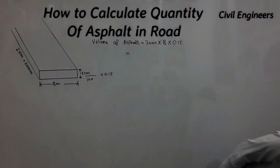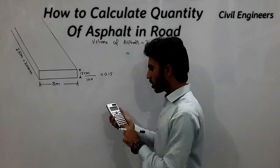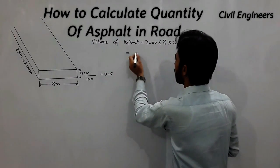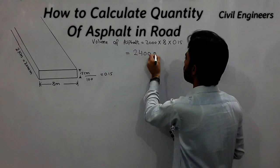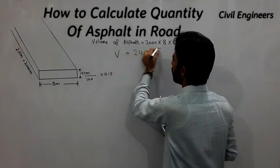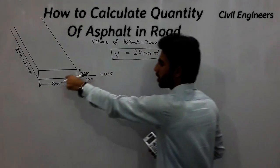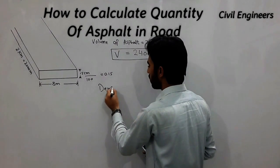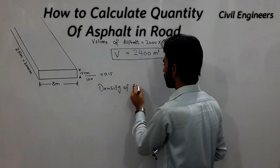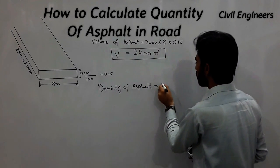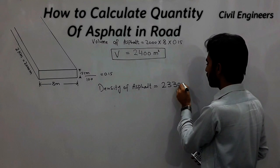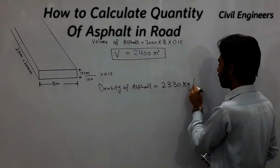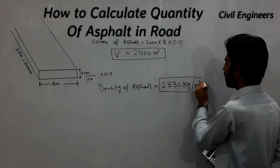This calculation gives us the volume value for the asphalt section. Now, what is the density of the asphalt? The density of the asphalt is 2330 kg per cubic meter.